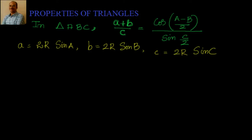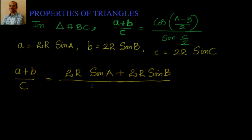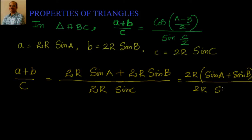I will say (a+b)/c is equal to (2R sin A + 2R sin B) divided by 2R sin C. Now, I can take common 2R. So it will become (sin A + sin B) divided by sin C.